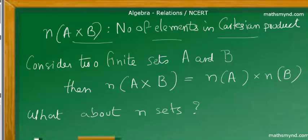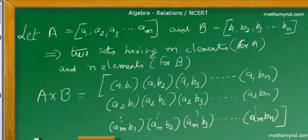Now, what about n sets? To avoid confusion and to understand the concept clearly, we use two different notations. The last element of set A is a_m and the last element of set B is b_n. So what is the Cartesian product of these two sets? The Cartesian product involves pairing the first element with all elements of the second set, then the second element follows the same procedure. The first set has m elements and the second set has n elements.